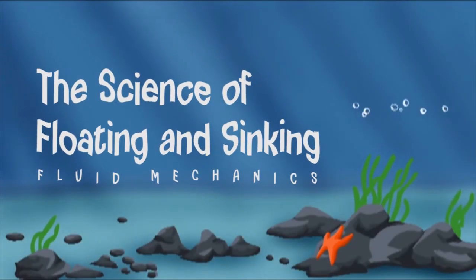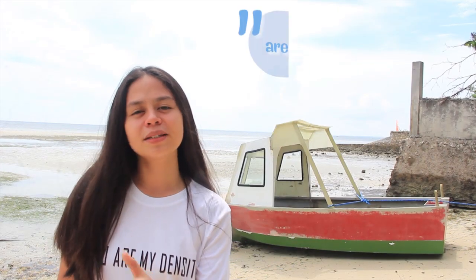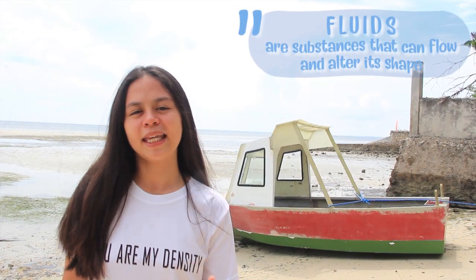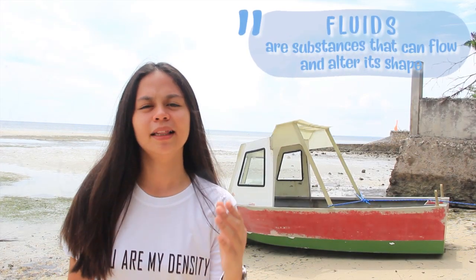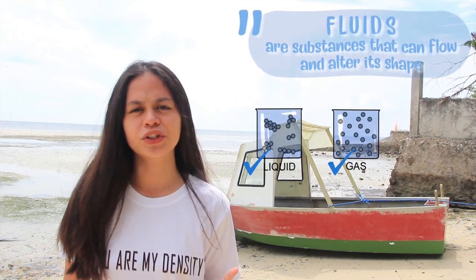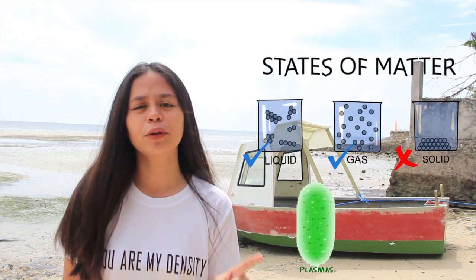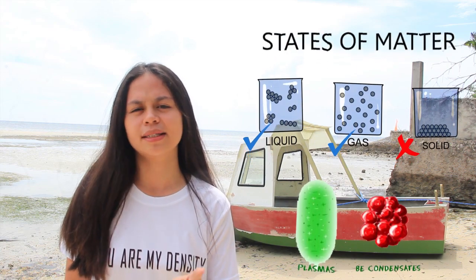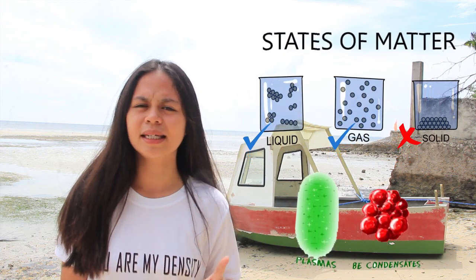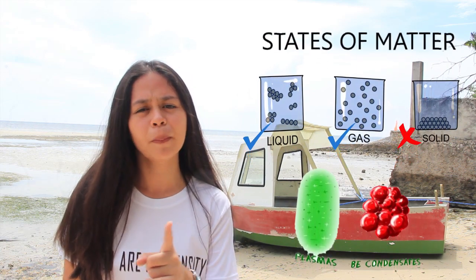Ever wondered why things float in fluids and other things sink, like the ship and the coin, respectively? Fluids are substances that can flow and alter their shape, like liquids and gases, but not solids. These states of matter, including plasma and Bose-Einstein condensates, exhibit differences in the densities of the particles.